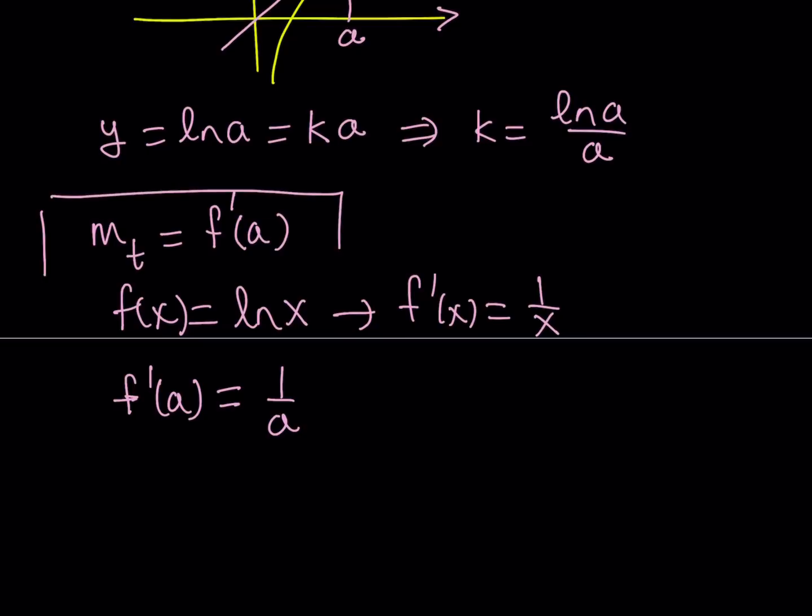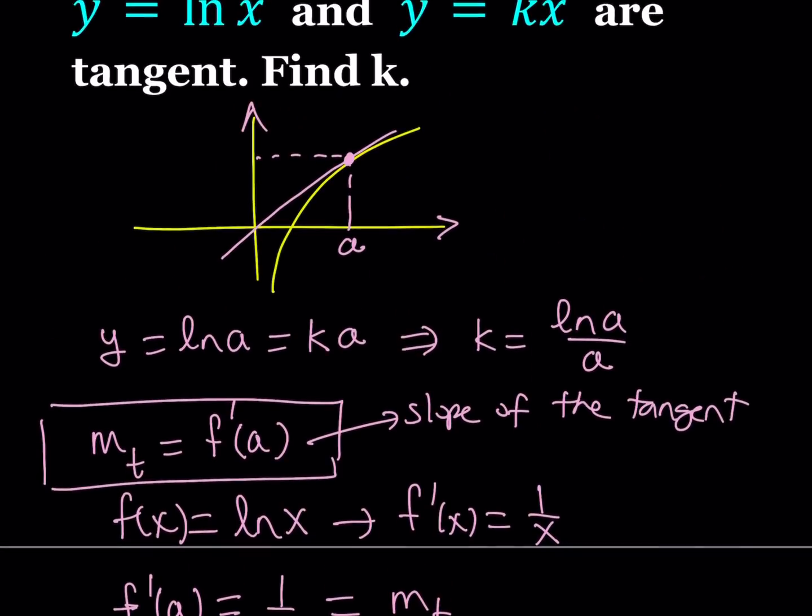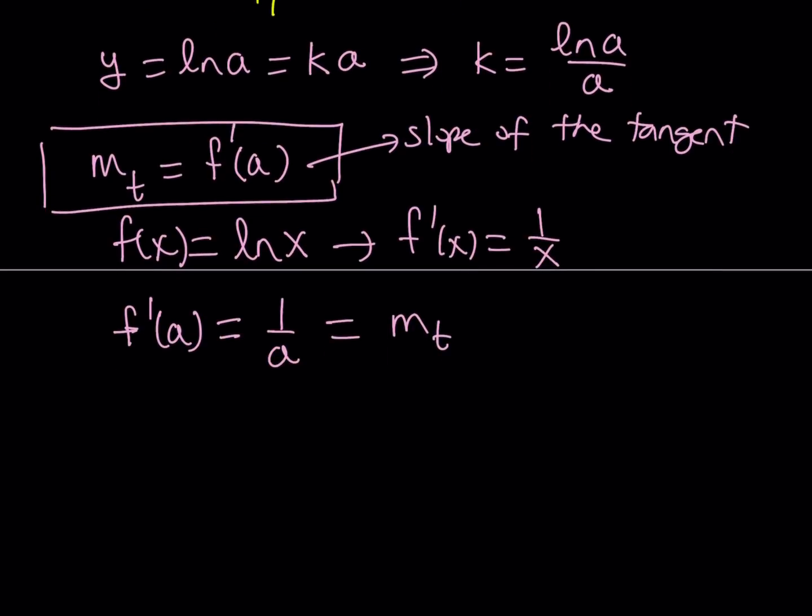And by the definition, the derivative at a is equal to the slope of the tangent at a. So this is the slope of the tangent. We can set this equal to m_t. But what is the tangent? The tangent is the line y equals kx. What is the slope of this line? It is k.